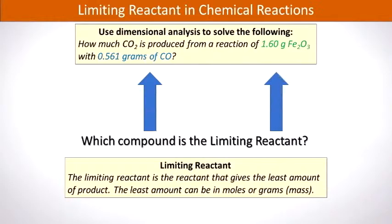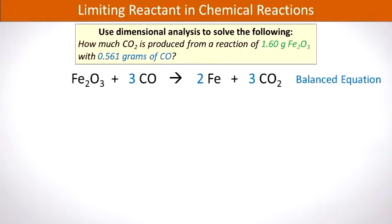Next let's take a look at limiting reactants where the answer is not so obvious — in other words, what do we do when it's not clear what the limiting reactant is. How much carbon dioxide is produced from a reaction of 1.60 grams of iron(III) oxide and 0.561 grams of carbon monoxide? In this case we must carry out an interconversion of both values in order to determine the limiting reactant and the yield of carbon dioxide produced.